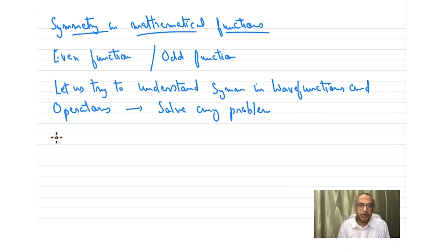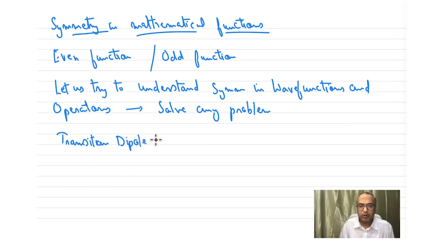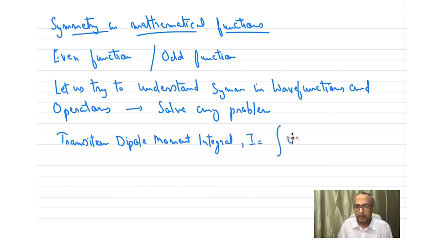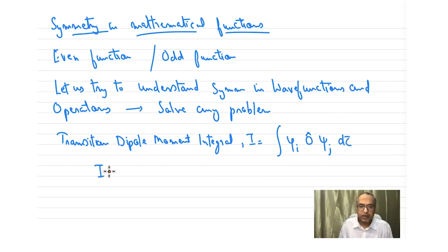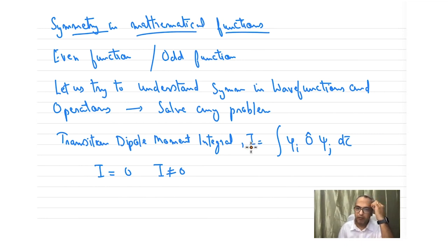In certain areas of chemistry, specifically spectroscopy, you will encounter something called the transition dipole moment — don't worry about what it is for now, we will explain it later. The transition dipole moment I is written as the integral of ψᵢ, operator, ψⱼ dτ. A lot depends on whether I goes to zero or not, and we can apply symmetry rules to determine this for a particular set of operators and wave functions.